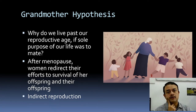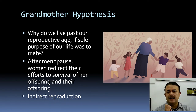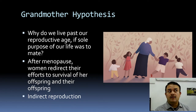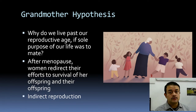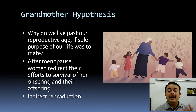Chimpanzees walk only about two kilometers per day in the wild and die quite young after reaching reproductive age. Humans and orcas (killer whales) are exceptions — both live much longer. The question is: why do women undergo menopause yet continue to live? The focus is on women because men do not lose fertility as dramatically with age.